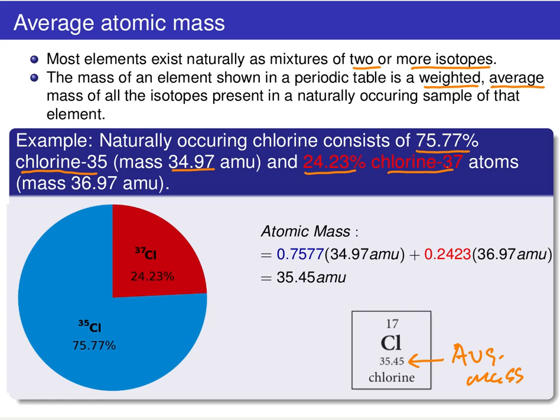Notice that the masses of each of these isotopes are very close to that whole number. Because we have this roughly 75-25 mixture, we have to take a weighted average of these isotope masses to get that average mass we find in the periodic table.